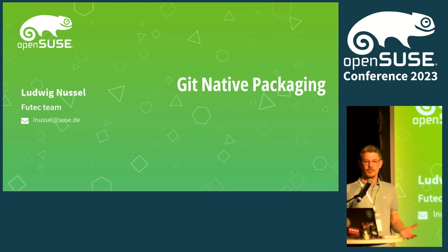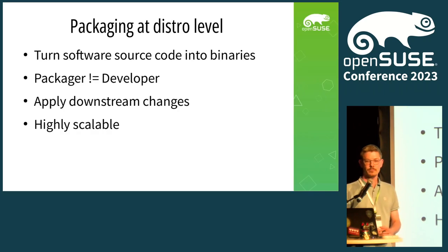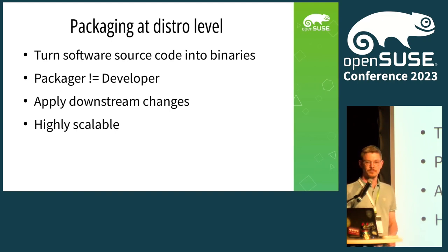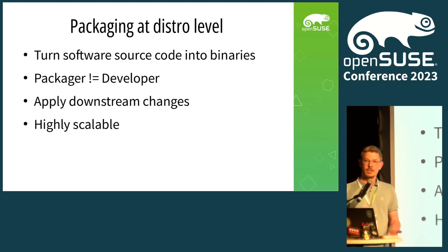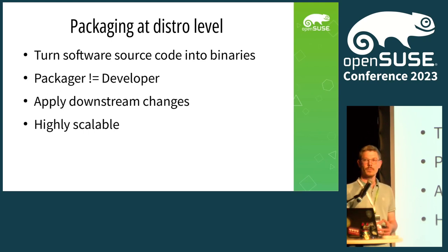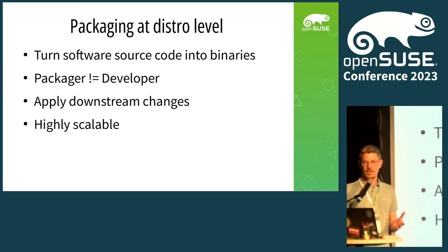But first, let's take a look at what app packaging actually means at distribution level. Our job as a distribution is to take upstream software source code and turn it into binaries that we deliver to our users. And usually there's no one-to-one relationship between a package and an upstream source and a packager. So one packager usually takes care of multiple packages, like hundreds or even thousands at the same time.